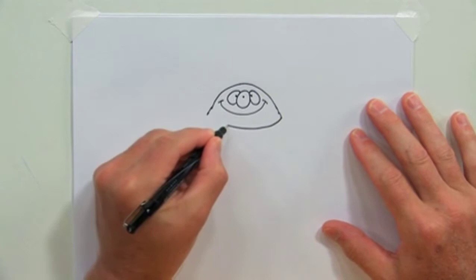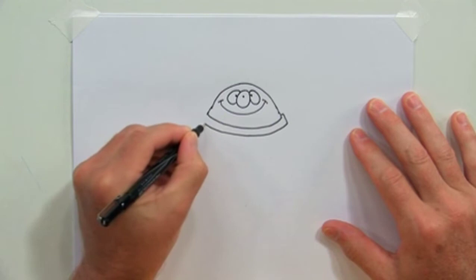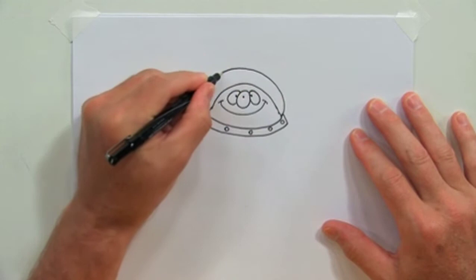We're going to put him in a space suit, so it's got to have kind of a little collar to it, just like that. Make that look like it's bolted to a space suit. Let's give him a helmet.